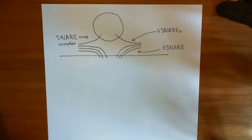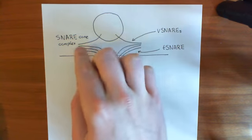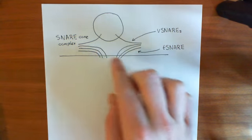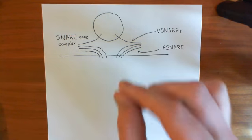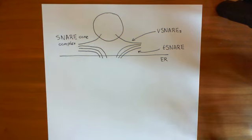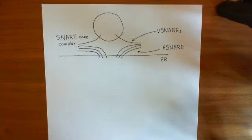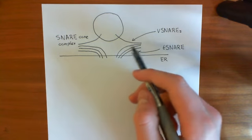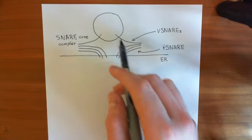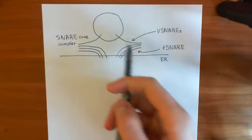That is in contrast to what happens in the case of COP2 vesicles — in anterograde transport, the COP2 coated vesicle contributes three of the alpha helices, and the target membrane, which is in that case the Golgi membrane, contributes only one of the alpha helices. So here with retrograde transport it's more like synaptic vesicle fusion: when you have synaptic fusion of synaptic vesicles with the plasma membrane, three of the alpha helices are contributed by the plasma membrane via T-snares, and one alpha helix is contributed by the V-snare.